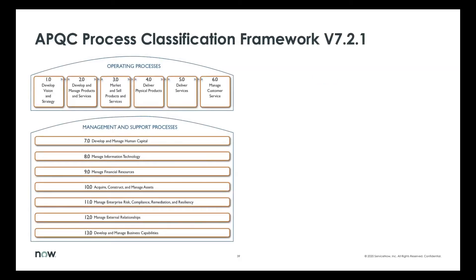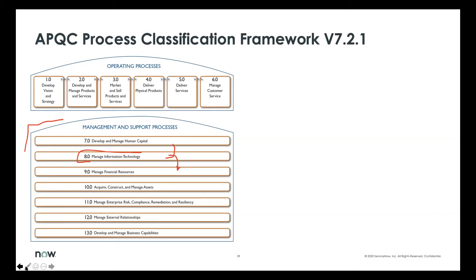The APQC process classification framework is probably one of the most common areas of overlap, and this is how we organize the metrics and processes in the environment. You can see the operating processes along the top — these are what I would call your main value stream. This is where you basically do product development, vision and strategy, develop and manage products and services, market and sell them, and deliver them. APQC in later versions separated out product and service delivery because they can be different or coupled. Then there's manage customer service, which is the ongoing support of your products in the market. Everything below that is really the supporting processes, and you can see that IT is one of them — IT can help automate the main ones and other supporting processes.